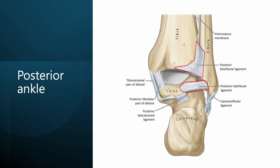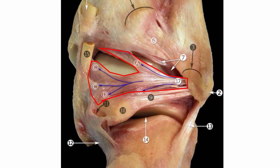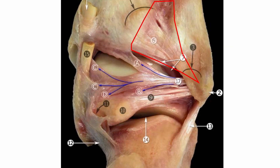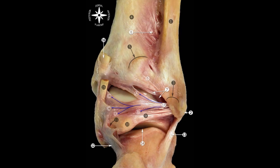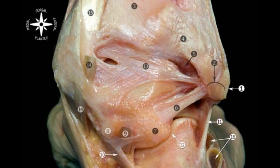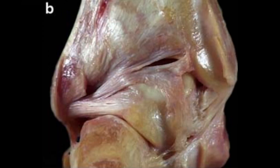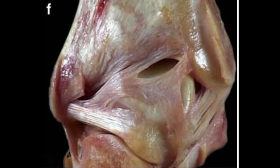Posterior ankle. The posterior talofibular ligament, posterior inferior tibiofibular, and transverse ligament compose the posterior ankle ligament complex. The posterior inferior tibiofibular ligament connects the posterior edge of the fibula's lateral malleolus to the tibia's posterior aspect. This ligament is part of the syndesmosis that binds the tibia to the fibula, providing stability to the ankle joint. The transverse ligament is often considered a deep component or a continuation of the posterior inferior tibiofibular ligament. It extends horizontally from the posterior edge of the tibia to the posterior aspect of the fibula, crossing behind the ankle joint, and is sometimes referred to as the inferior transverse tibiofibular ligament. These two ligaments are integral to the ankle's structural integrity and functional stability, particularly in motions involving twisting or rotating the foot.